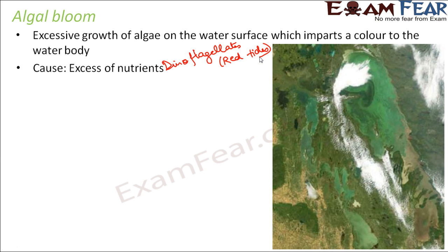The cause of algal bloom is an excess of nutrients. Just as nutrients are required for the growth of every living organism, algae also need nutrients to grow. When they get excess nutrients, growth becomes excessive. Specifically, nutrients like phosphates — which are present in high concentrations in fertilizers — are key. In agriculture, when fertilizers are used in excessive amounts and it rains or irrigation follows, the fertilizer gets washed away and reaches the nearest water body, like a pond or river.